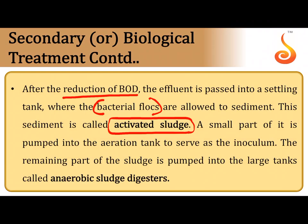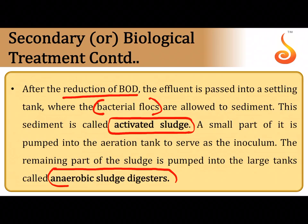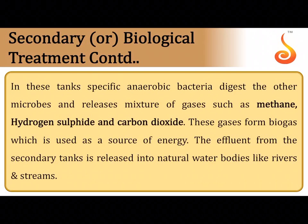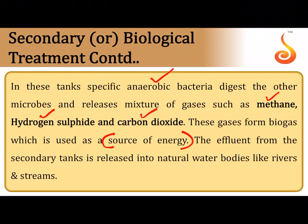The remaining settled flocs are placed in anaerobic sludge digesters where no oxygen is provided. In these anaerobic tanks, anaerobic bacteria already present in the sewage get activated. These bacteria degrade the organic matter in the flocs — including the bacteria and fungal filaments themselves (which are also organic). The anaerobic bacteria release a mixture of gases such as methane, hydrogen sulfide, and carbon dioxide. This gas mixture is not a waste product but can be used as a source of energy in the form of biogas.